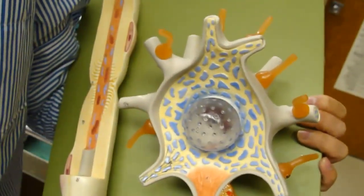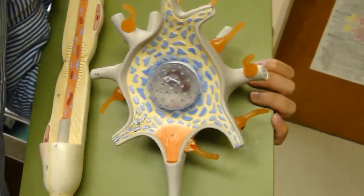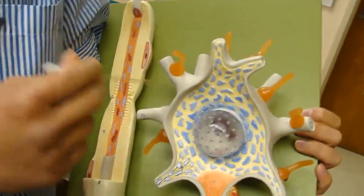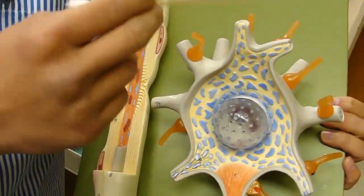Nissl body is the one that makes the proteins or does protein synthesis. So the projections that extend from the somatic body are the dendrites, they are for getting information from the other neurons.